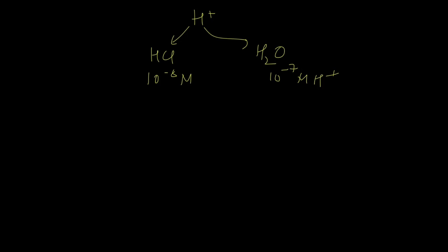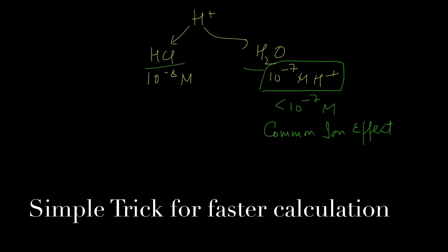Now in reality it gives us less than 10 to the power minus 7 M H+. Why? Because of an effect known as common ion effect. This effect simply tells us that if you have two sources from which you can get the same ions, then the weaker one will produce less ions. But for our problem we will consider it to be producing 10 to the power minus 7 M H+ and I will show you what to do after you calculate the answer.